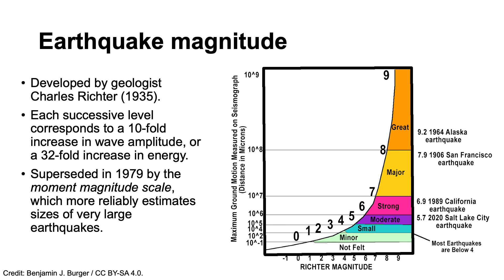As seismographs became more sophisticated, it became possible to develop an objective scale for measuring the energy released by an earthquake. The Richter scale was developed in 1935 by geologist Charles Richter. It measures the magnitude of earthquakes by recording the amplitude of the resulting earthquake waves, with the values converted into a logarithmic scale. Each successive level corresponds to a tenfold increase in wave amplitude, or a 32-fold increase in energy, so a magnitude 6 earthquake is actually more than 1,000 times larger than a magnitude 4 earthquake. In 1979, the Richter scale was replaced by the moment magnitude scale, which is nearly identical but provides more reliable estimates for very large earthquakes, though the media still often refers to these as Richter magnitudes.